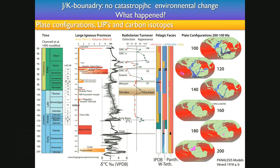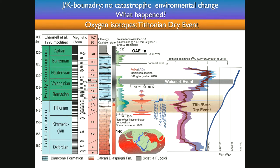If you zoom in, though, there is an important change in many pelagic sequences of Tethys — of the Western Tethys at least. You go from red to grey and from very siliceous rocks into mainly pelagic limestones. We have some turnover in radiolarians at this time — a very important turnover — but this turnover is not confirmed in Panthalassa. The oxygen isotopes show a wiggling that has been interpreted as a change in the hydrologic cycle, called the Tithonian dry event, which straddles the Tithonian-Berriasian transition.